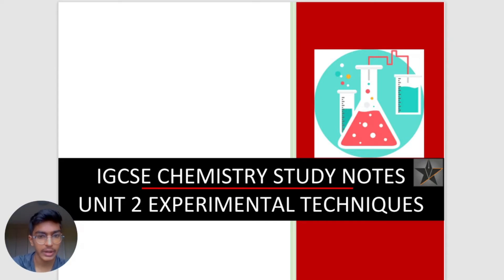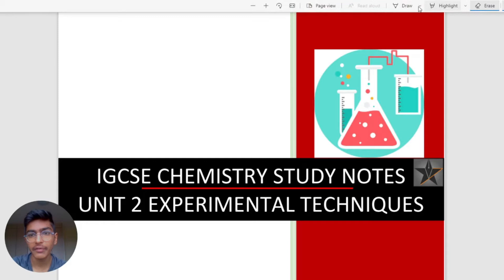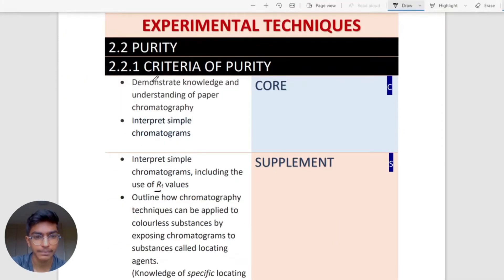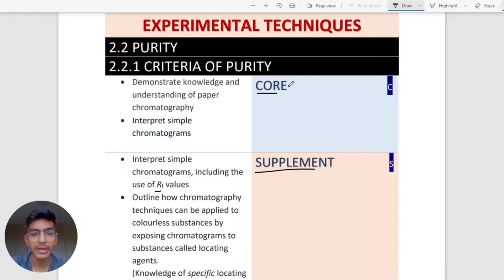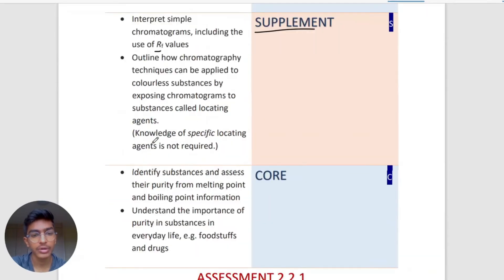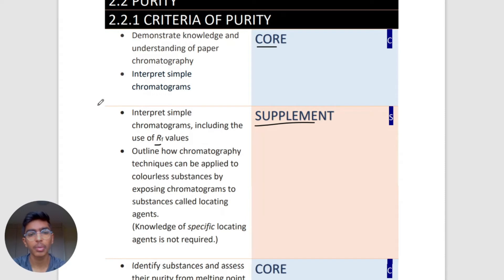Hey guys, welcome back to another IGCSE chemistry video. Today we're going to be looking at unit 2 of the experimental techniques - this is part 2. In the last video we covered unit 1 on the particulate nature of matter. I'm going to be categorizing this video into core and supplement. Core means you only need certain topics, but if you're doing supplement you need to know everything. We're mainly going to be focusing on chromatography because it's a very popular question tested in exam papers.